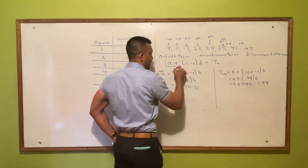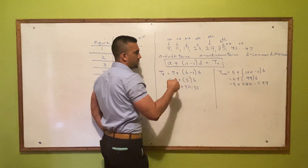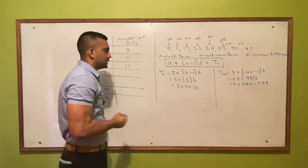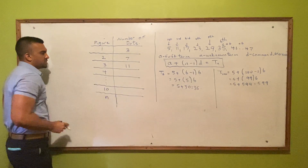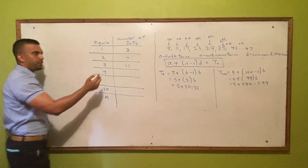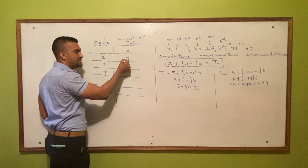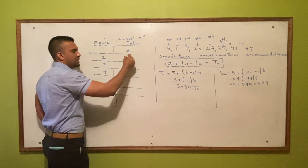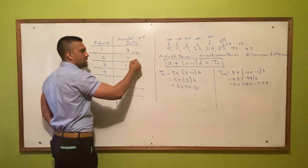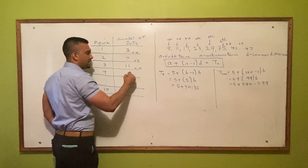We use the same principle for our original sequence. We have 3, 7, 11, and so forth — this is increasing by 4. 3 plus 4 is 7, 7 plus 4 is 11. So the next term is 11 plus 4, which gives us 15. Identifying that term gets you one mark.